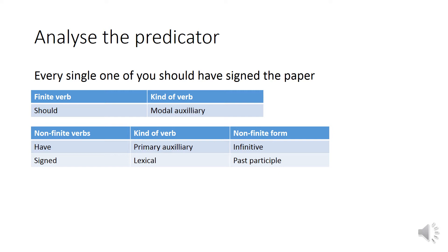'Should' here is a finite verb, and it's a modal auxiliary. It's an auxiliary — not primary, but modal. We'll talk about that later. The non-finite verbs in this predicator are 'have' and 'signed'. Non-finite verbs are verbs that cannot change their tense. You can't change 'have' to 'had' — you can't say 'should had signed'. 'Have' here is non-finite; it's a primary auxiliary. Remember, 'do', 'have', and 'be' are the primary auxiliaries.